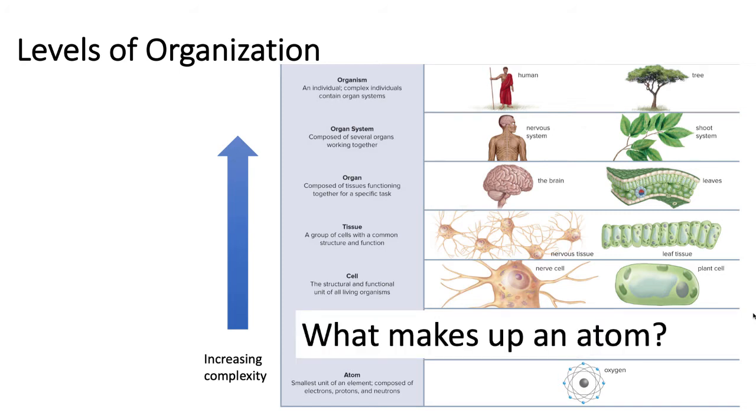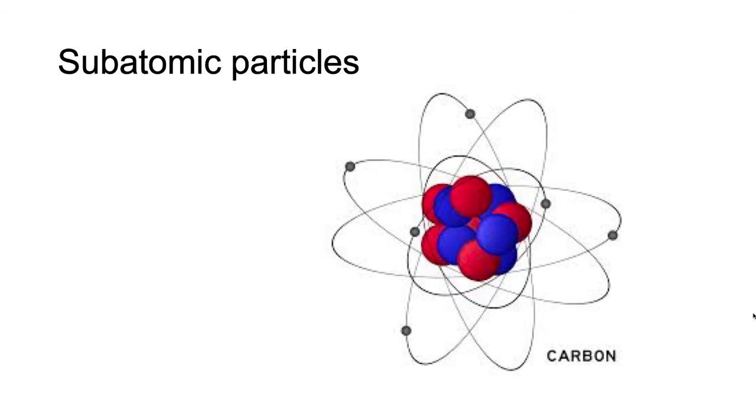But what makes up an atom? Atoms are composed of several different types of subatomic particles. These particles have rules they must follow.